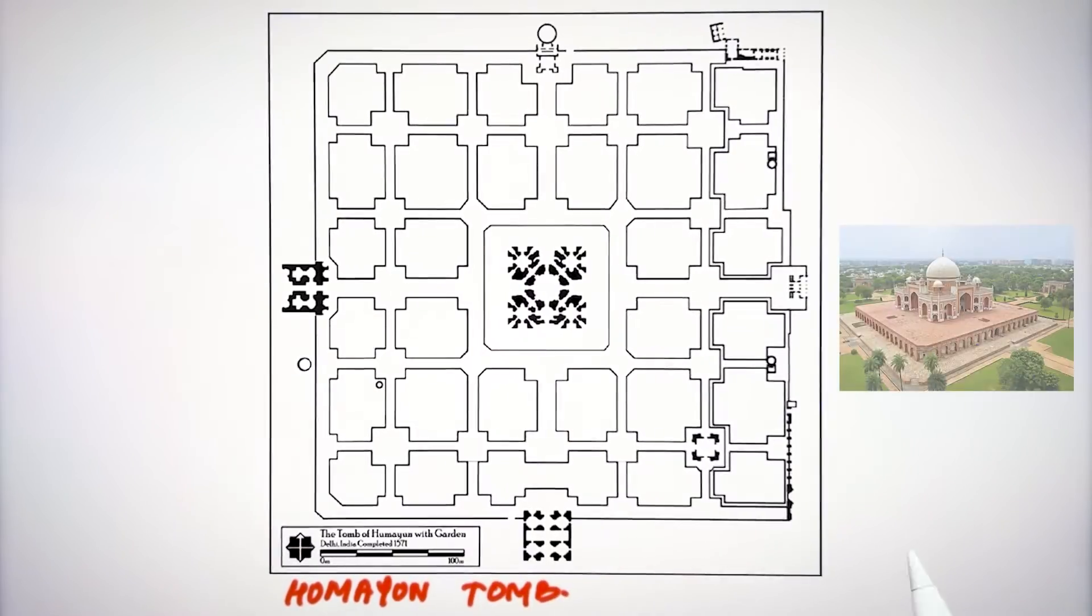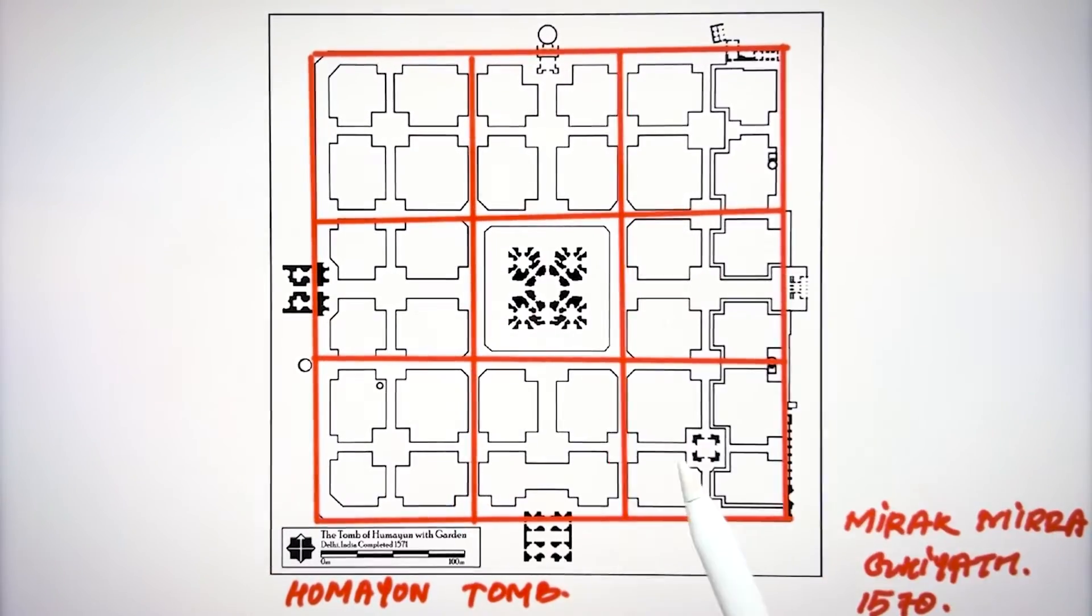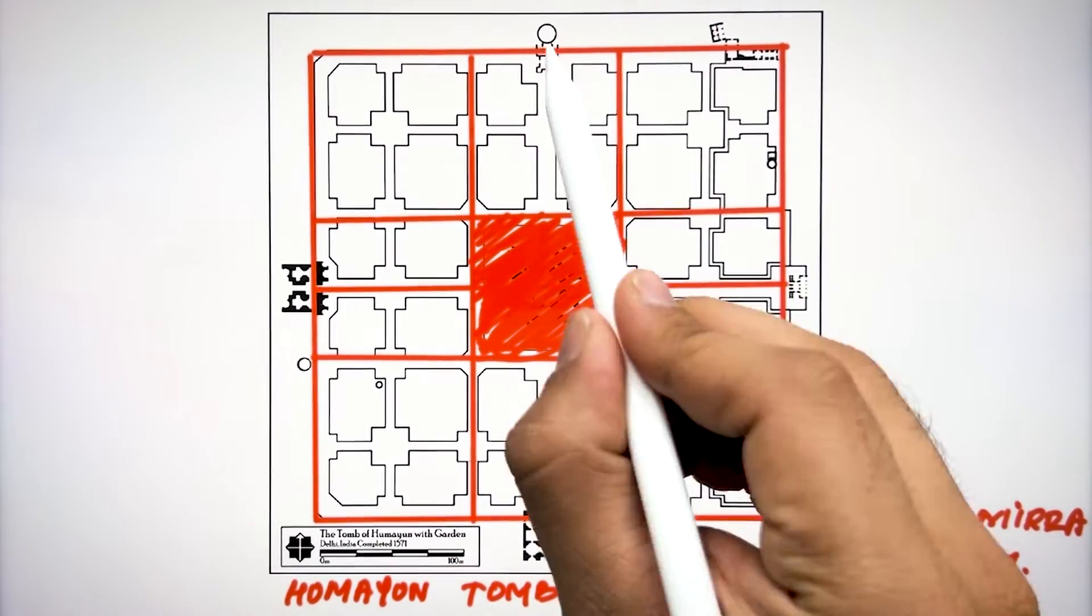The Mughal architecture also follows the principle of mathematics. In this Humayun's Tomb designed by Mirak in 1570 it follows the principle of nine grid with the central focus of the space.